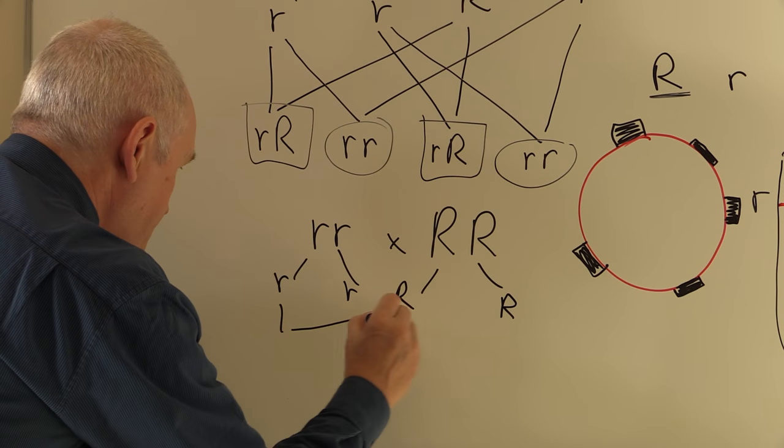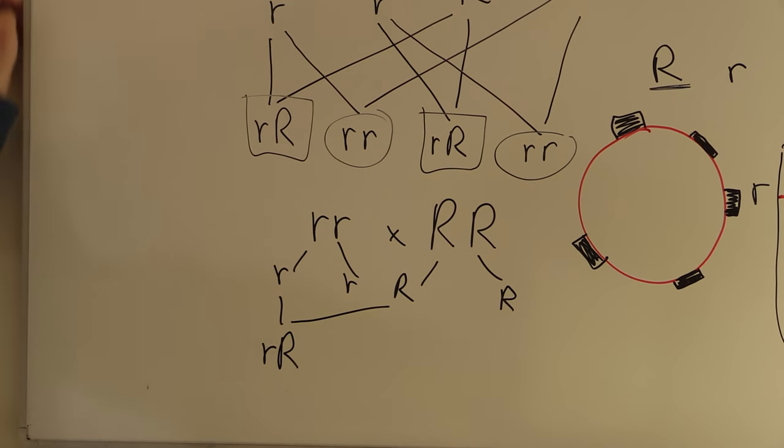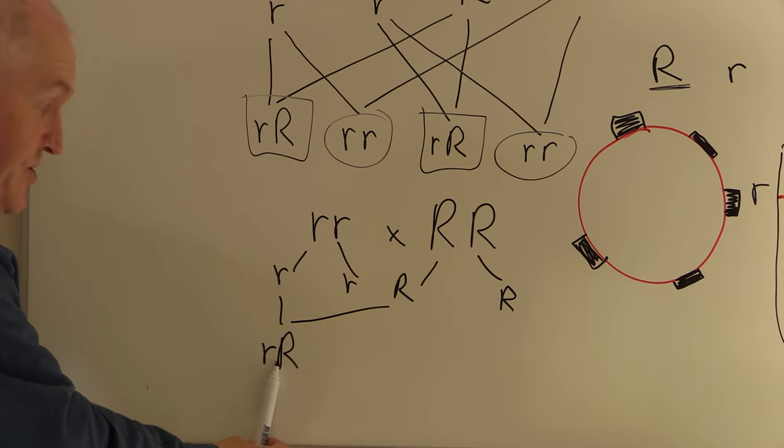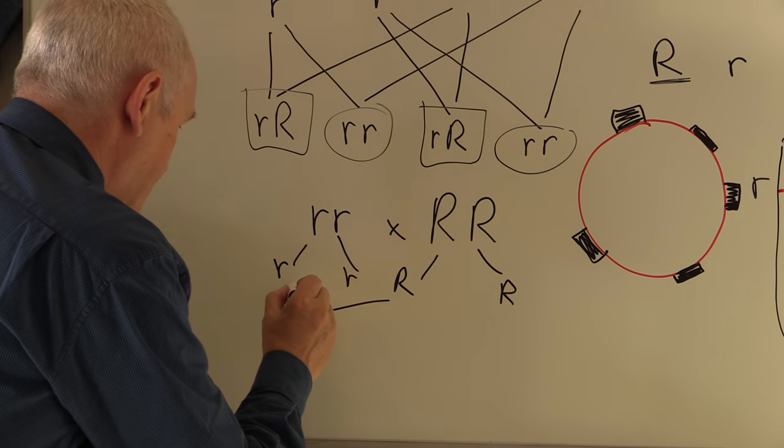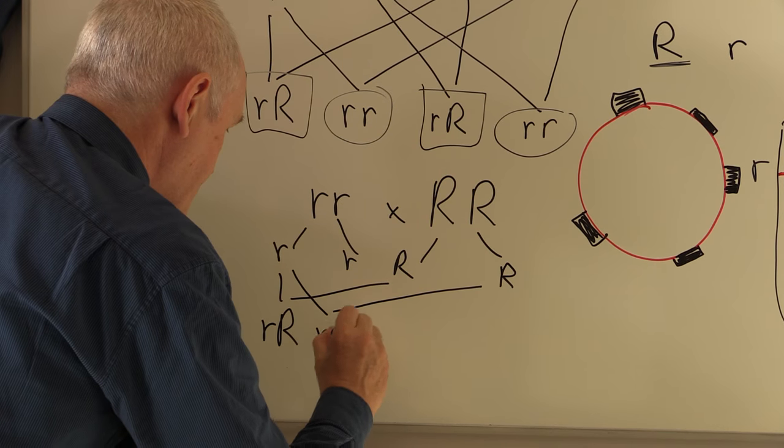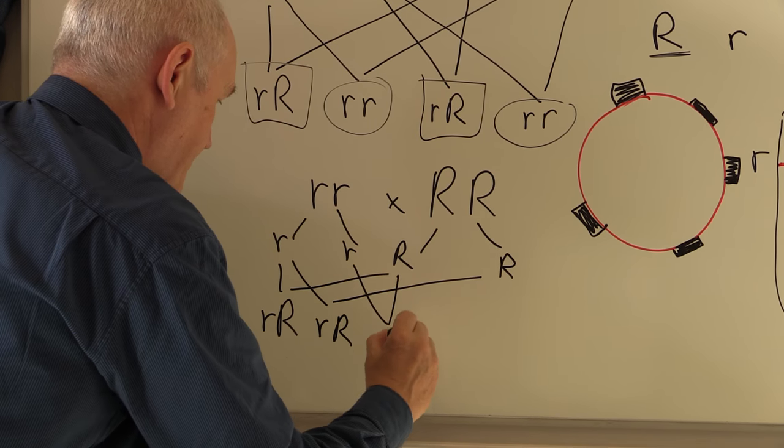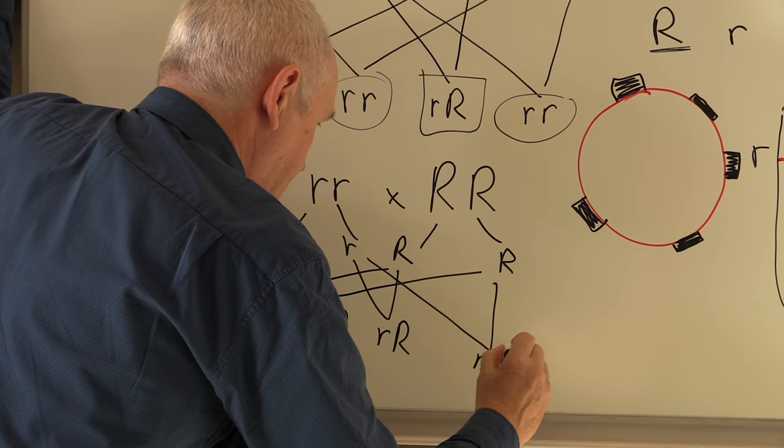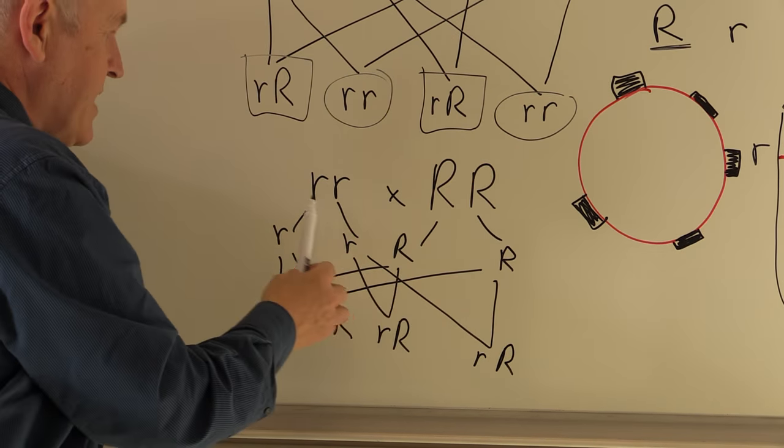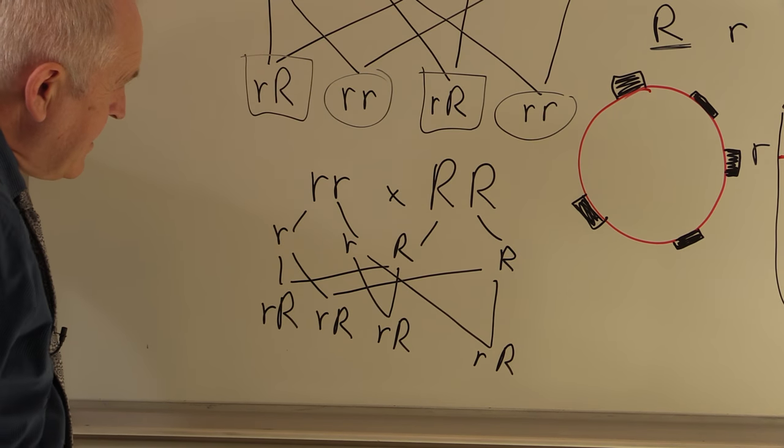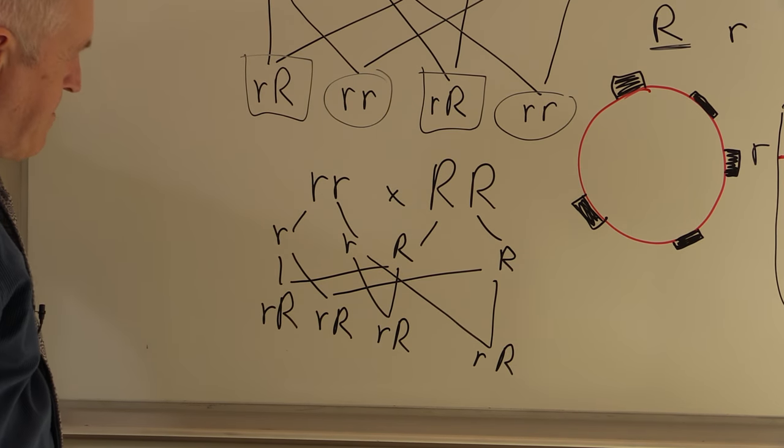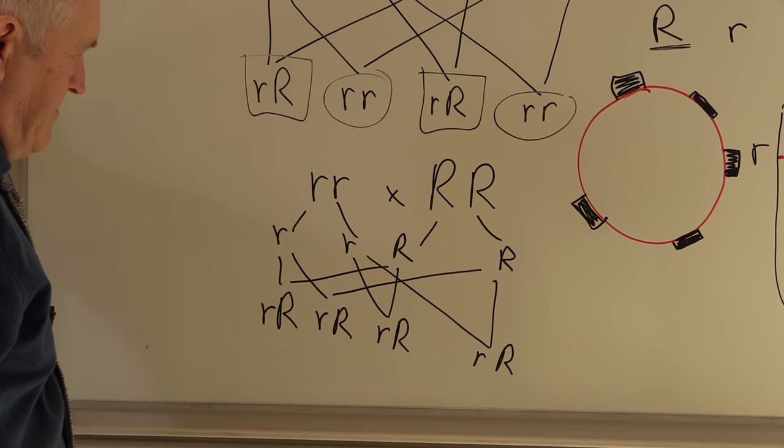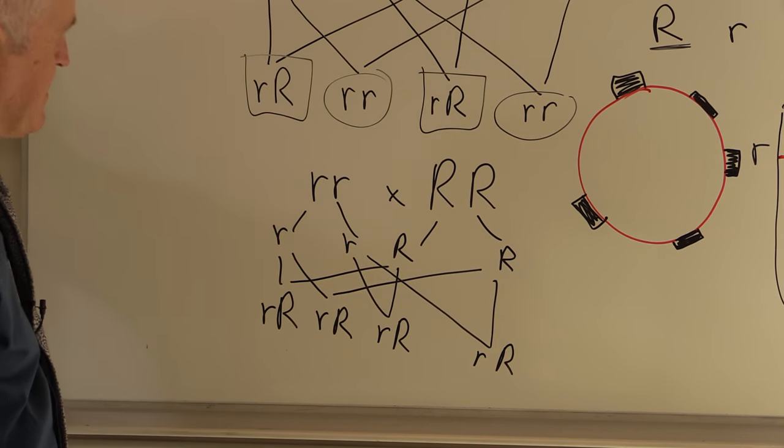So this could combine with that one, giving us Rr. Because there is one copy of the Rhesus positive gene, that is going to give us a Rhesus positive fetus. Likewise with this possible combination. In fact, likewise with that one, and indeed, likewise with that one. So in this case, even though the mother is Rhesus negative, 100% of potential fetuses formed by this union would be Rhesus positive. Therefore, the probability of Rhesus factor incompatibility occurring is going to be high.